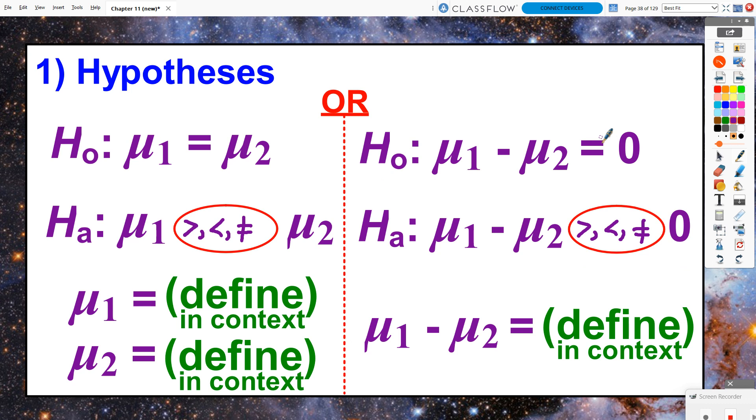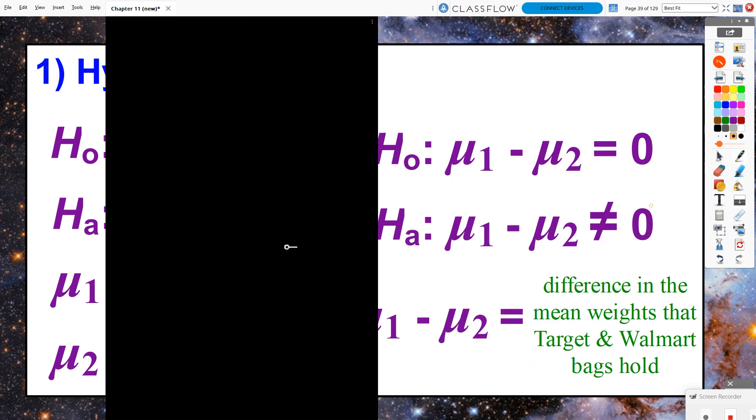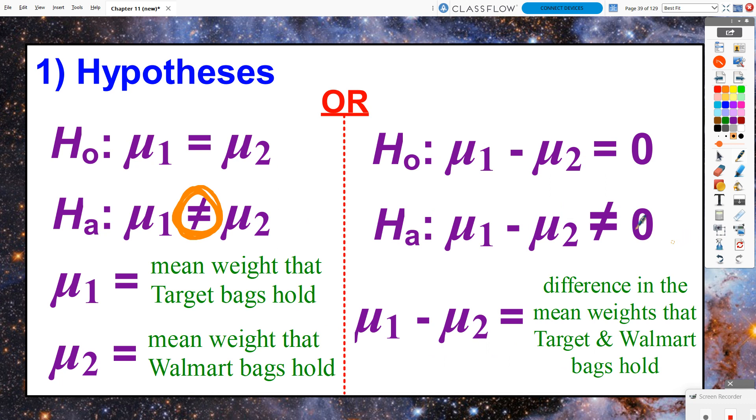You can write it as either of these two situations here. Write it either as just directly comparing the two means to each other, or looking at the difference of the means. When we do this entire problem, we're ultimately always talking about a difference of means. So, to me, it makes more sense to actually have our hypotheses written as a difference of means. We do still need to define either the individual means, μ1 and μ2, or if we write it as a difference of means, then ultimately we could write just one definition here to say that μ1 - μ2 equals the difference of the means.